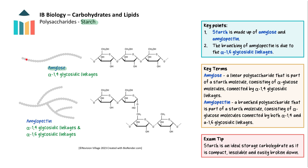Amylose is an unbranched polysaccharide made up of alpha glucose molecules joined together by alpha 1,4 glycosidic linkages. This long amylose chain coils to form a more compact molecule. Amylopectin is also made up of alpha glucose molecules, but it is a branched polysaccharide because as well as alpha 1,4 glycosidic linkages, there are alpha 1,6 glycosidic linkages. Together these two molecules form starch, which is insoluble and compact, making it an ideal storage carbohydrate of plants.